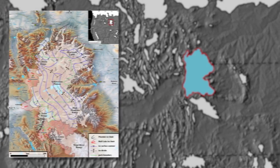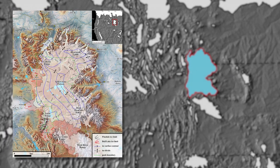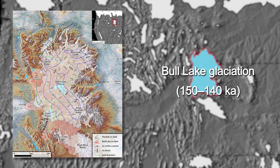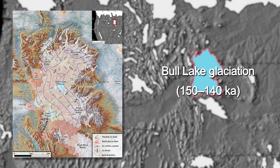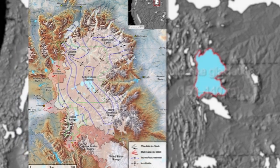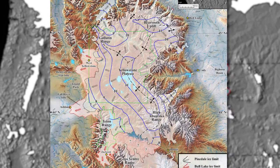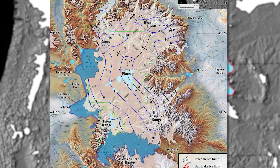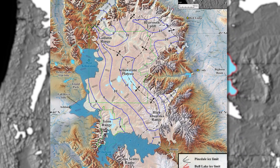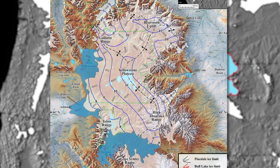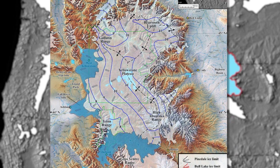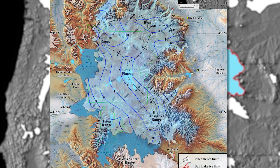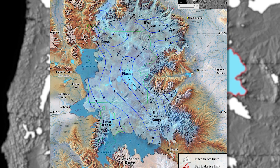Glacial deposits from the penultimate glaciation, known as the Bull Lake, date to 150 to 140,000 years ago. Bull Lake glaciers extended beyond the limits of the last glaciation, called the Pinedale, along the southern and western margins of the complex. But Pinedale glaciers overrode Bull Lake deposits on the north and east sides.